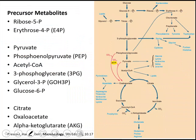Here is another figure, this time from Prescott's Microbiology book, showing the precursor metabolites and the molecules they are used to build. Here you see the list of precursor metabolites — glucose-6-phosphate, pyruvate, and others — and how they are linked to the synthesis of biosynthetic molecules.